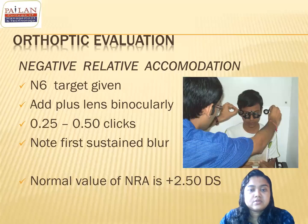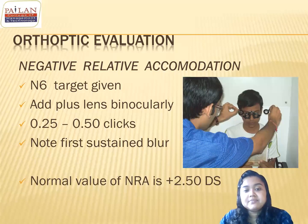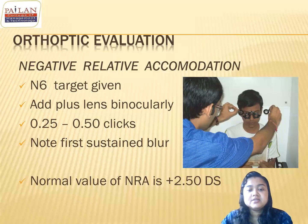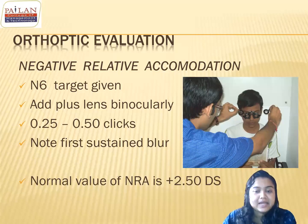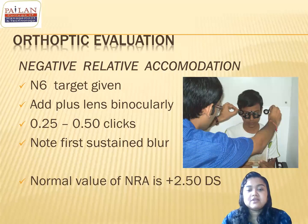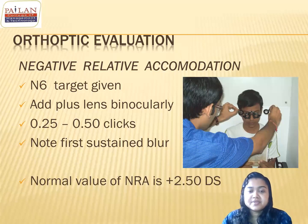NRA test will basically relax the accommodation and measure it — measure the maximum amount of accommodation that can be relaxed. The normal value of NRA is +2.5.